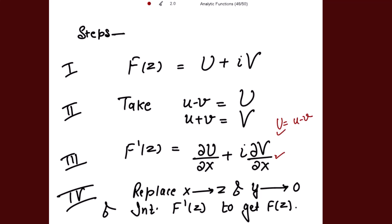For that, I can use the Cauchy-Riemann equations to get partial V over partial x in terms of U. From the CR equations, partial V over partial x is negative of partial U over partial y. So I can replace this with negative partial U over partial y so that I can find F'(z) very easily. The CR equations are very helpful here. Then using the Millie-Thomson method, we replace x by z and y by 0, and finally integrate F'(z) to get f(z) in terms of z.